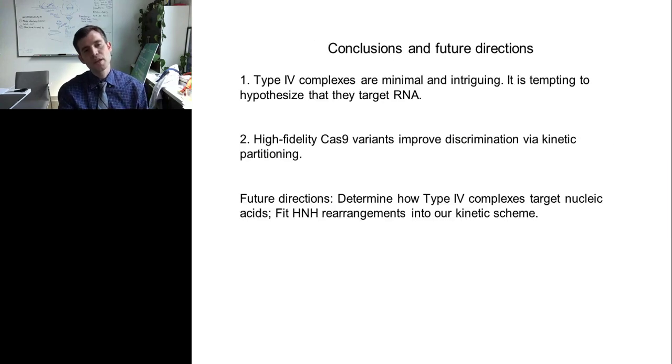Conclusions and future directions. From the first part of the talk, type IV complexes are minimal and intriguing. It's tempting to hypothesize that they target RNA based on structural similarities that they have with the type III complexes. Second part of the talk, I talked about high-fidelity Cas9 variants and how they improve discrimination via kinetic partitioning, whether to go forward with irreversible cleavage or going backwards. Future directions in the laboratory include determining how the type IV complexes target nucleic acids. We need to figure out which nucleic acid that it actually targets. And then, we would like to solve structures of it in complex with that particular nucleic acid. We'd also like to do some HNH labeling experiments similar to those that have been done in the Doudna lab, but with our kinetic schemes.